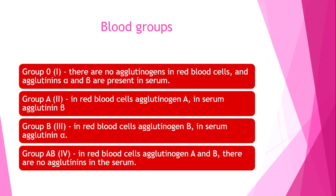Group O has no agglutinogens in the red blood cells, and agglutinins alpha and beta are present in the serum. Group A has agglutinogen A in red blood cells and agglutinin beta in serum. Group B has agglutinogen B in red blood cells and agglutinin alpha in serum. Group AB has agglutinogens A and B in red blood cells and no agglutinins in the serum.